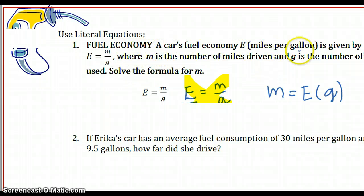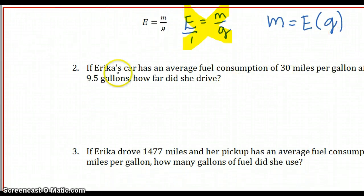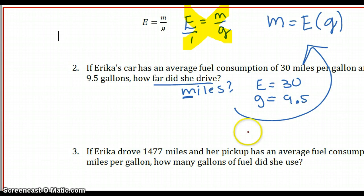I've solved for M. M equals E times G, where E stands for miles per gallon that the car will get. Erica's car averages 30 miles per gallon. She used 9.5 gallons of gas. It asks us, how far did she drive? That's how many miles. So we're going to be solving for M. Since we already solved for M in this equation, it's a matter of plugging in. In place of E, I'm going to plug in 30. And in place of G, I'm going to plug in 9.5. So when you do that multiplication, you'll find out that's 285 miles.